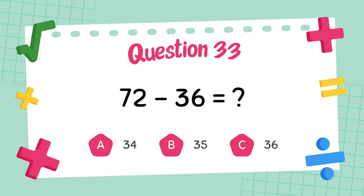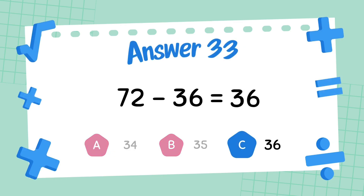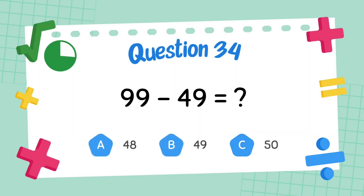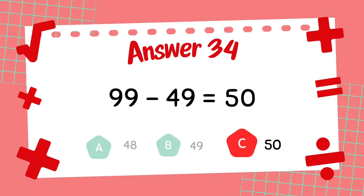What is 72 minus 36? The answer is 36. What is 99 minus 49? The answer is 50.